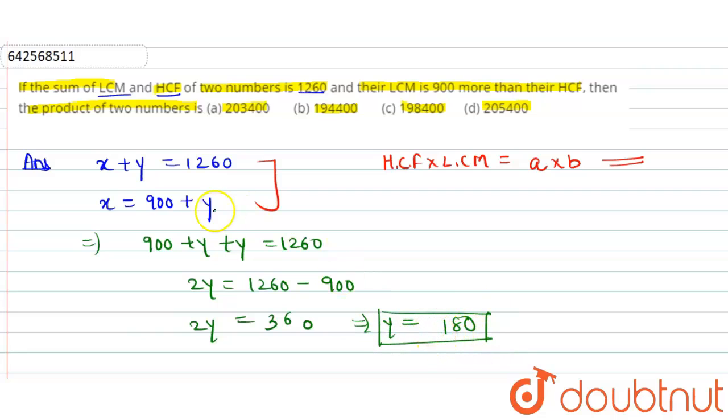From the value of y, we can easily find out the value of x. So putting the value of y in this equation, we will get x = 900 + 180, that is equal to 1080. So the value of x is 1080.